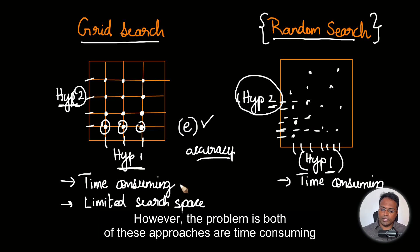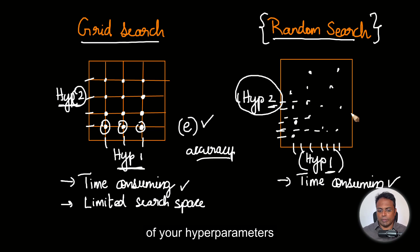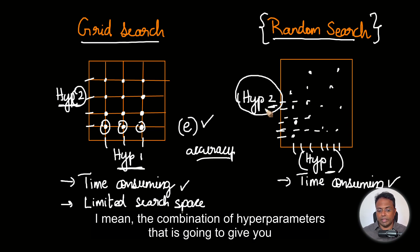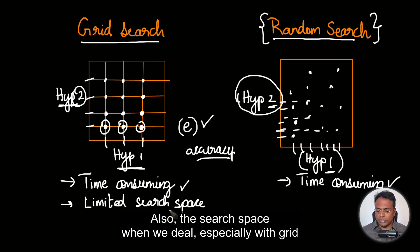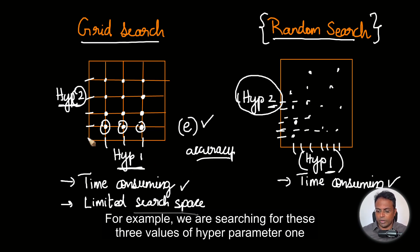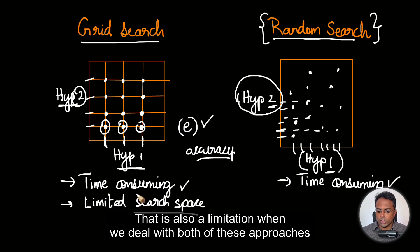However, the problem is both of these approaches are time-consuming. In random search, we will never really know the combination of hyperparameters that is going to give you the lowest value of the errors. Also, the search space, especially with grid search, might be limited. For example, we are searching for three values of hyperparameter 1 — what if the optimal value lies outside these values? That is also a limitation when dealing with both of these approaches.